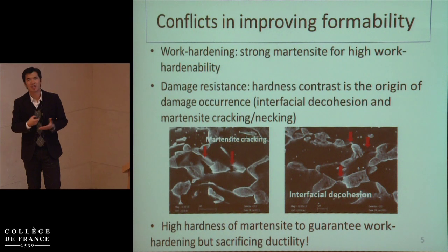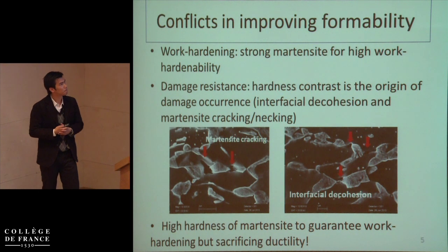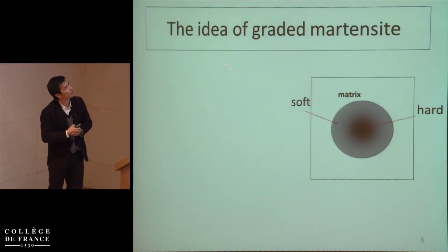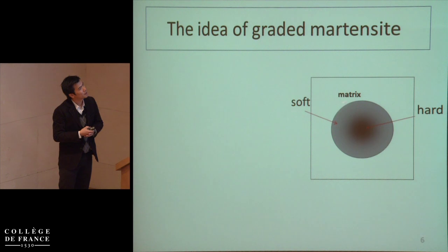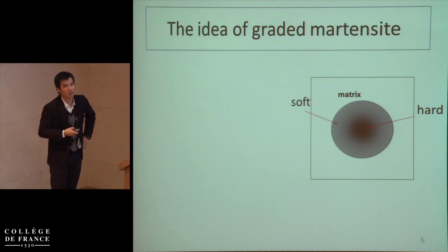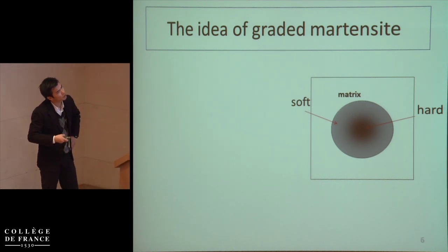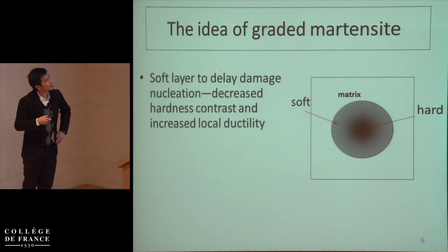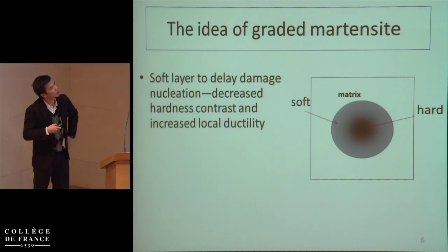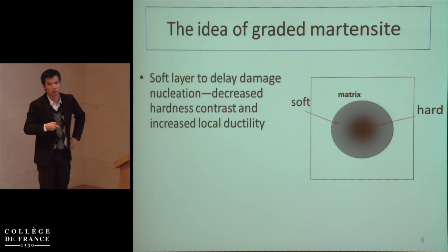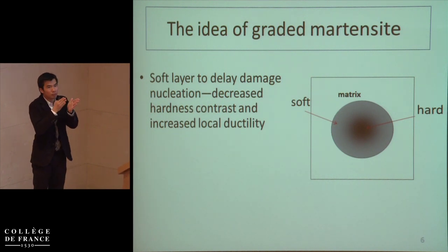Principally, if we have hard martensite to guarantee the work hardening, we will sacrifice ductility at the same time. That is why we have the idea of the graded martensite phase. In this graph — our dream — the matrix is ferrite and the inclusion is martensite phase, but it is not homogeneous. We want a soft layer at the interface and a hard core in the middle. The soft layer at the interface is designed to delay damage nucleation by decreasing local hardness contrast and to increase the local ductility of martensite, especially if damage initiates by martensite cracking from the phase boundary.